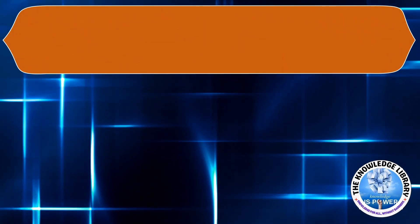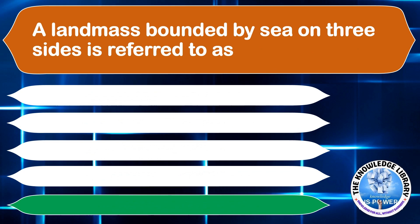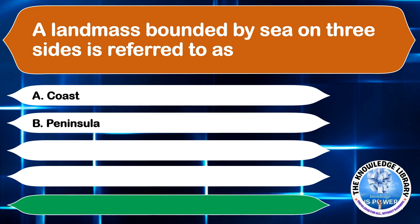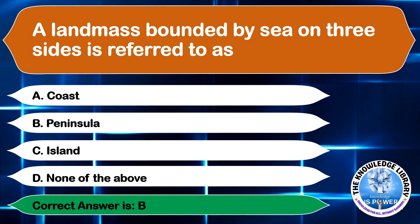A landmass bounded by sea on three sides is referred to as: A. A Coast, B. Peninsula, C. Island, or D. None of the above. The correct answer is option B, Peninsula.